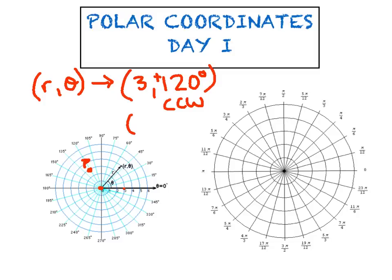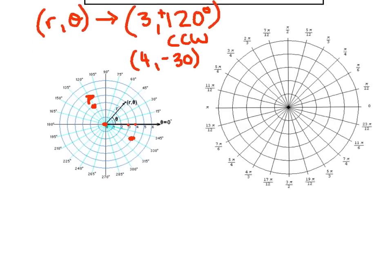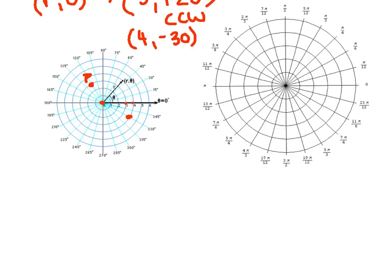For the ordered pair 4, -30°: walk four units to the right on the x-axis, then rotate clockwise 30 degrees, landing right at -30. From this point forward, let's make an agreement that we're going to speak in radians only.